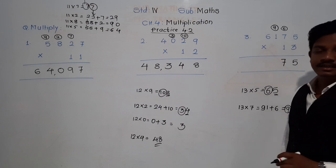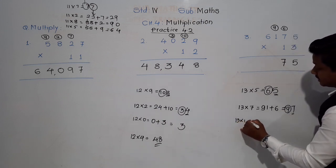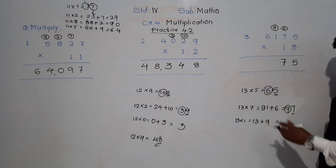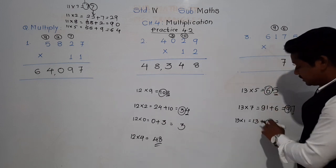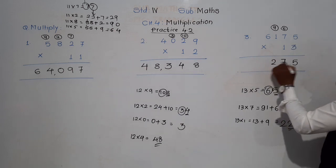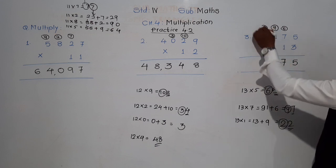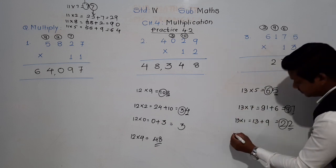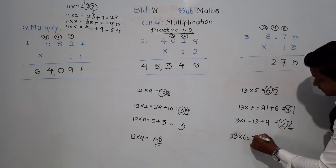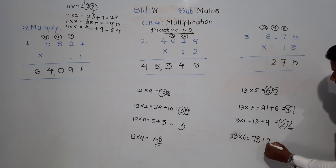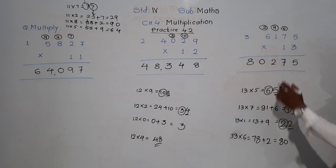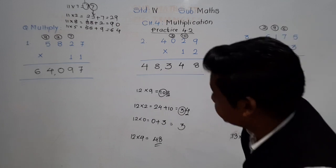13 ones are 13 plus carry 9. 13 plus 9 is 22. 2 will come down and this 2 will be carried. Then 13 sixes are 78 plus this 2: 78 plus 2 is 80. There is no more place to carry, so the answer is 80,275.